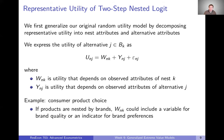Previously we would have put all of these things together into one representative utility for each alternative. But now, if there are attributes specifically applicable to all alternatives within a nest, we pull those out and treat them separately. The things that still vary at the alternative level we treat separately as Y.